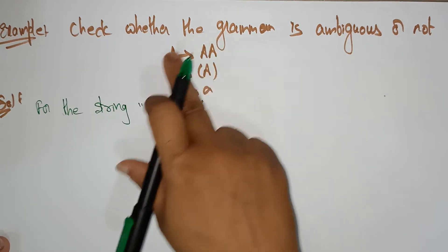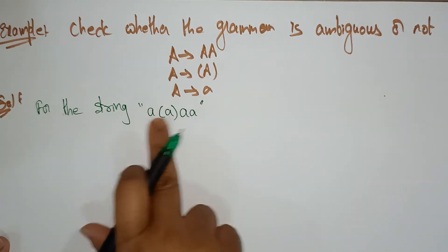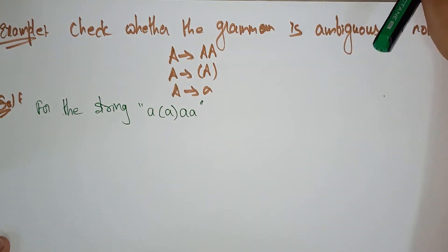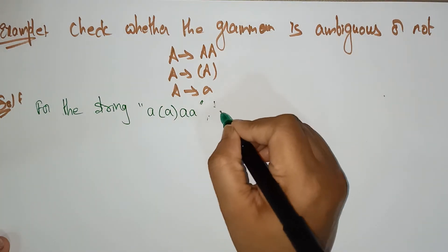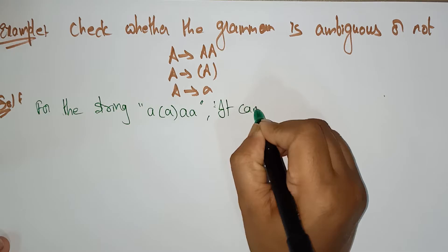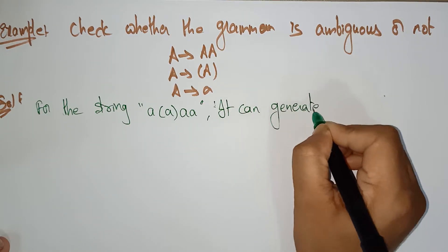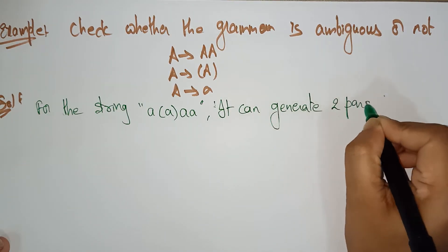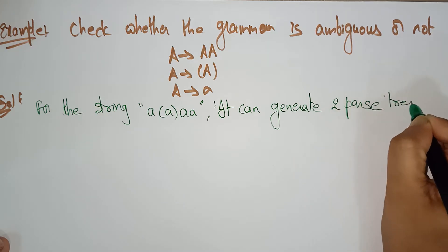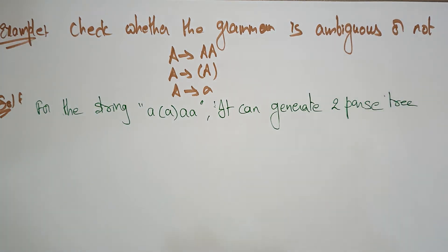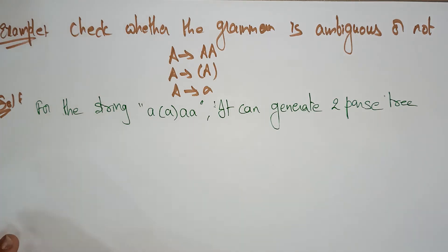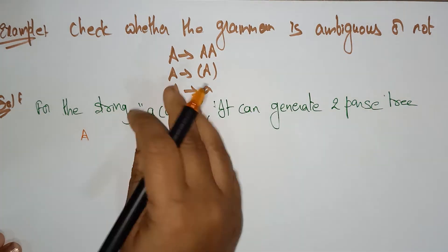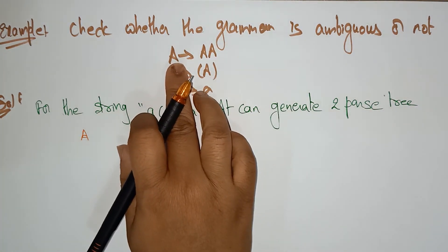This string can be derived using the given production rules. The grammar can generate two parse trees. Let's see whether it is generating two parse trees or not. If it is not generating two parse trees, we can say it is not an ambiguous grammar. But here it is generating two parse trees, so let's see.